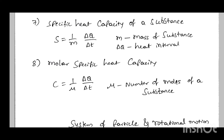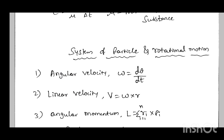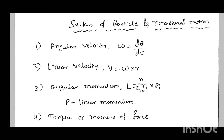These are the main formulas in the thermal properties chapter. Next, angular velocity denoted by omega: omega equal to d theta by dt, where theta is the angular displacement. Next, linear velocity v equal to omega into r, where omega is the angular velocity and r is the radius vector. Next is angular momentum, symbol L.